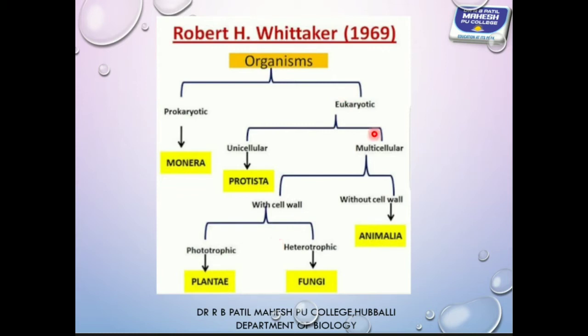Multicellular organisms are broadly classified into two groups based on the presence or absence of a cell wall. Those organisms whose cells possess a cell wall are placed in one group — with cell wall, it includes two kingdoms: Kingdom Plantae and Kingdom Fungi.